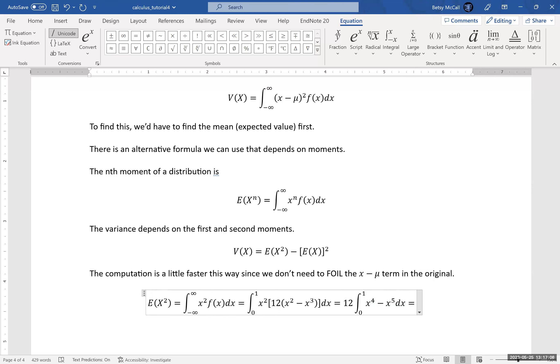When I integrate that, I'm going to get 12 times 1/5·x⁵ - 1/6·x⁶ between 0 and 1, which is going to give me 12 times 1/30. 12/30 reduces to, once I cancel out a 6, 2/5.